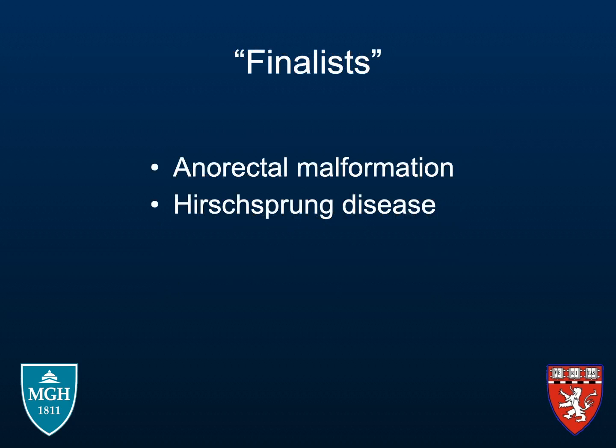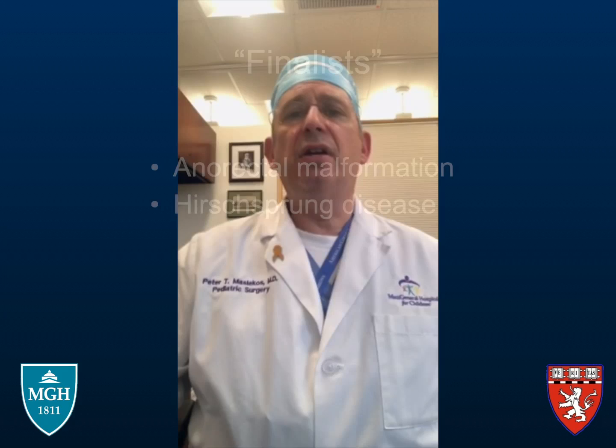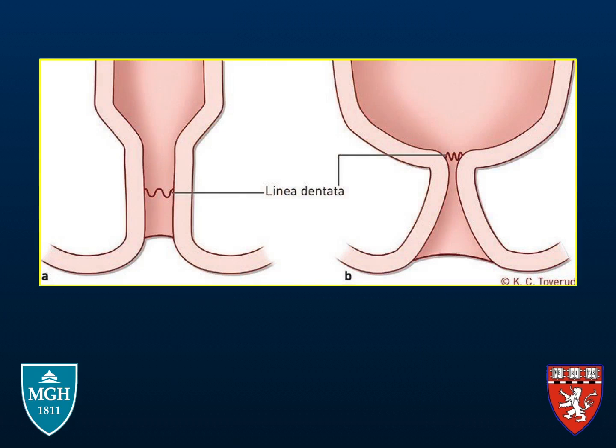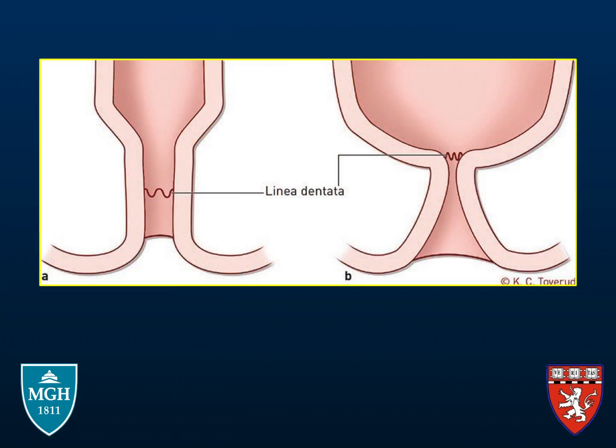Hirschsprung disease, as we know, can be diagnosed on contrast enema but confirmed on rectal biopsy, whereby, as Dr. Levitt suggested, the biopsy has to be done above the dentate line and the dilated segment in this case.